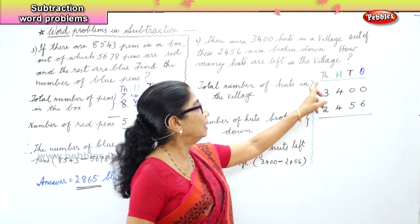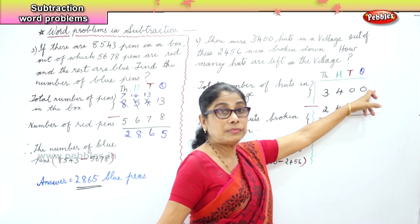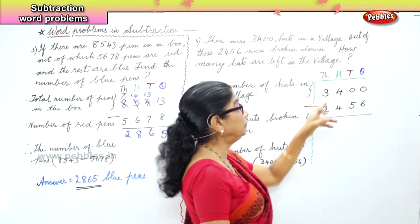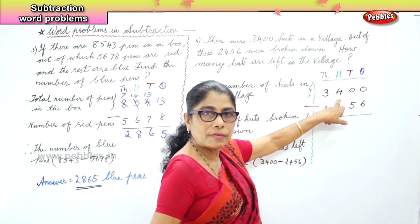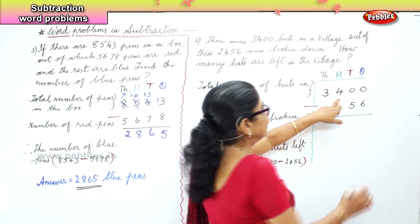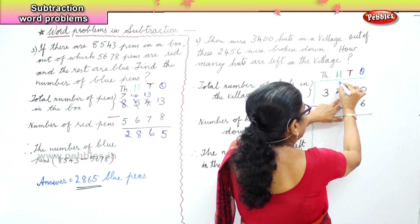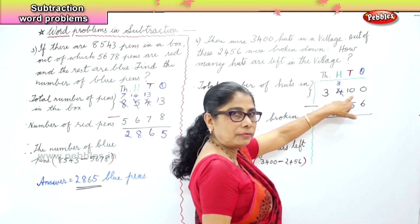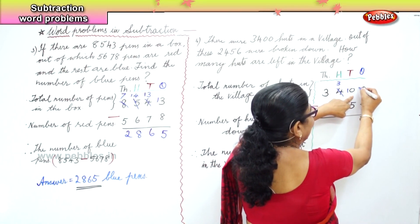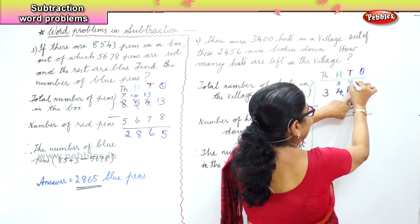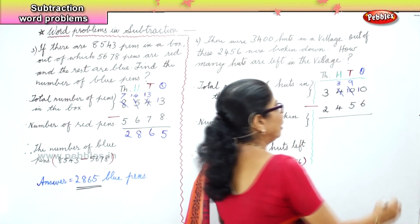In the ones place we have zero take away six — not possible. We cannot borrow from tens because tens is also zero. So we borrow one from the hundreds — four hundreds becomes three. We bring one ten to the tens place. Now borrow one from tens to ones: ten ones take away six is four. In the tens place: nine take away five is four.